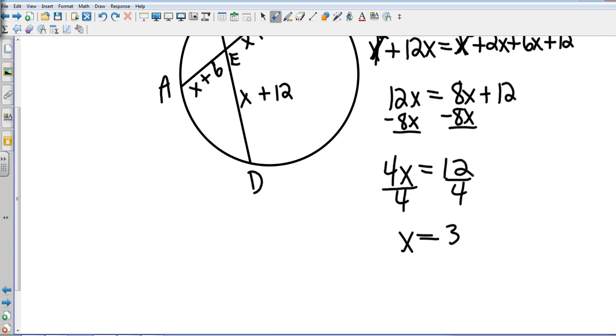So be careful what they're asking for. If they just want you to solve for X, you are done. If they want you to find the actual lengths, then you'll need to substitute those back in. So that is two chords intersecting in a circle. Let's move on to our next one.